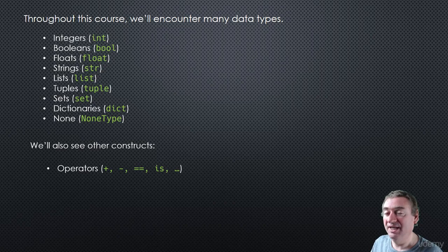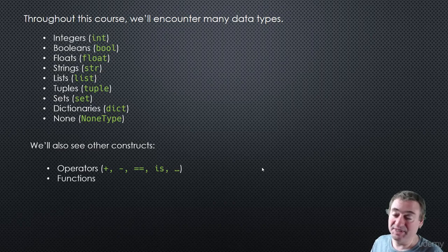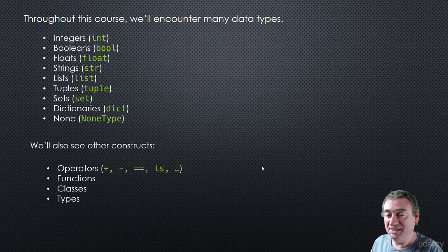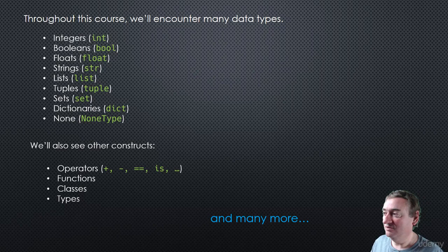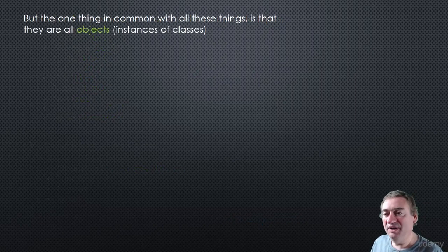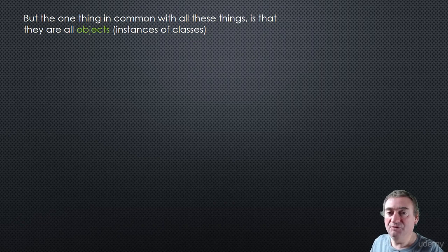Even the ellipsis operator is an object. We're also going to look at functions, classes, and types - things you've seen before in Python, and many more throughout this course. These are all different things: data types, operators, classes, functions - but they all have one thing in common: they are all objects, in other words they are all instances of classes.